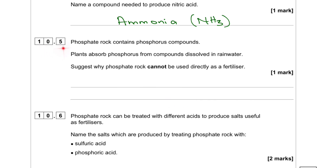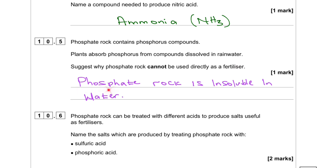Question 10.5. Phosphate rock contains phosphorus compounds. Plants absorb phosphorus from compounds dissolved in water. Suggest why phosphate rock cannot be used directly as a fertilizer. Phosphate rock is insoluble in water.